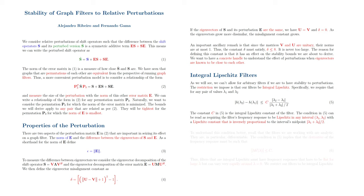The constant C in equation 5 is the integral Lipschitz constant of the filter. The condition in equation 5 can be read as requiring the filter's frequency response to be Lipschitz in any interval, lambda 1, lambda 2, with a Lipschitz constant that is inversely proportional to the interval's midpoint, lambda 1 plus lambda 2 divided by 2.